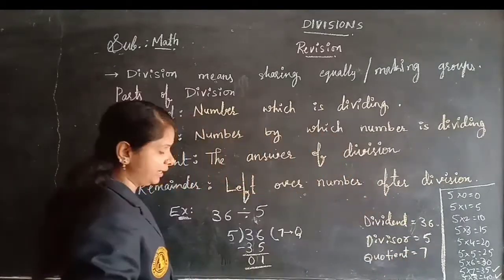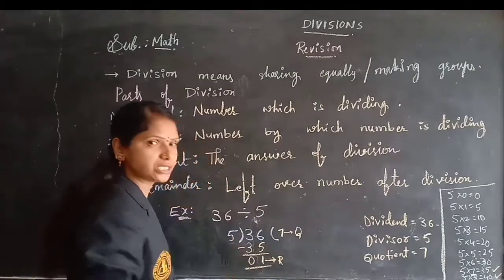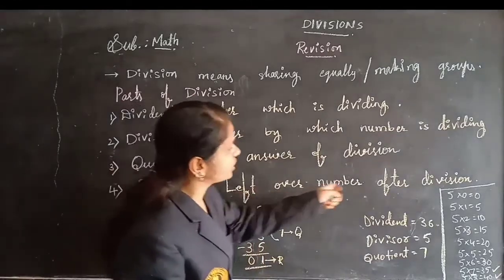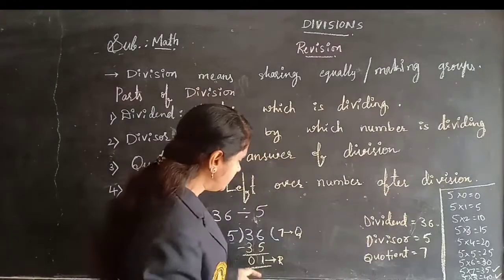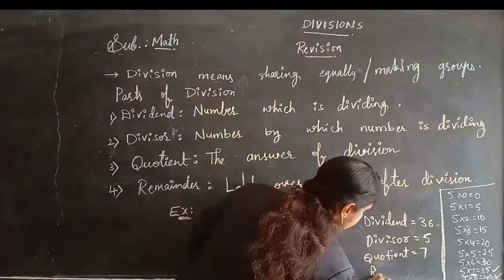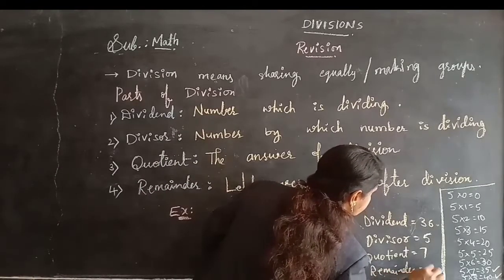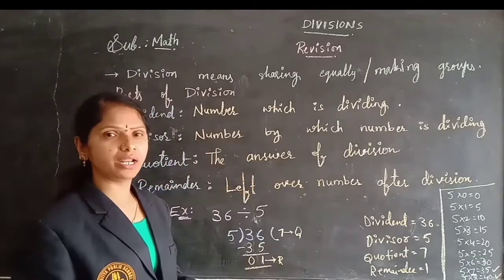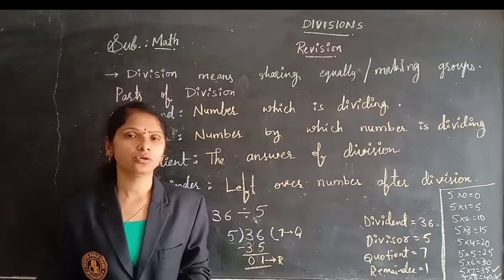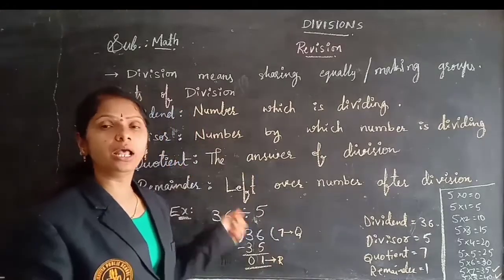And next, the leftover number after doing subtraction — at last, the leftover number after division is called the remainder. The remainder in this problem is 1. So this is the dividend, divisor, quotient, and remainder.